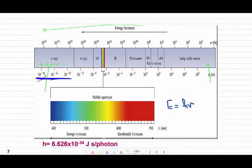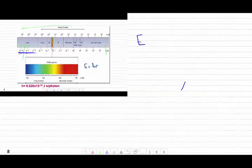To calculate the energy, the energy of an electromagnetic radiation equals h times frequency.